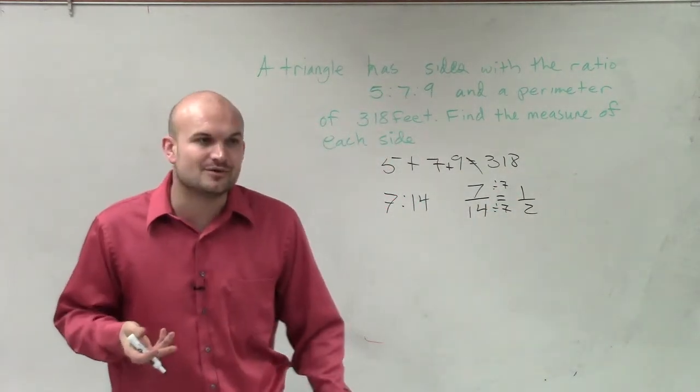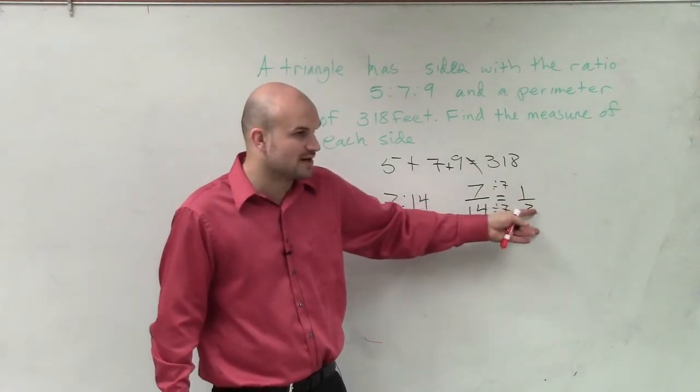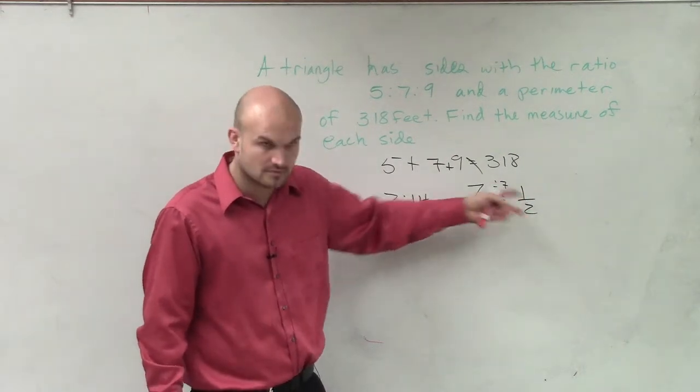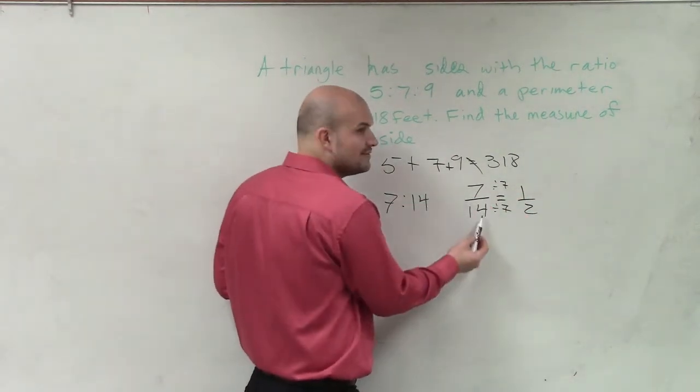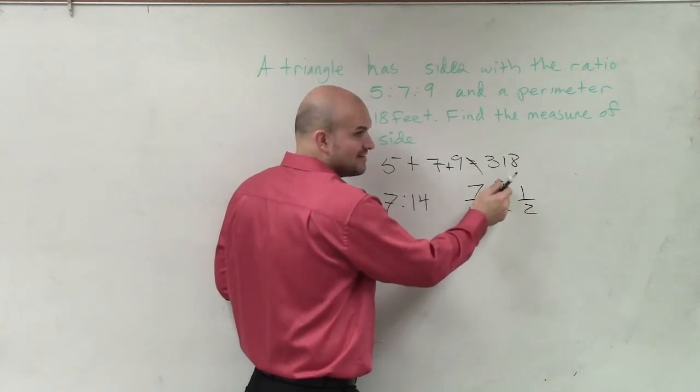So what I'm pretty much asking you is if this is already reduced, so if I divided by 7 to get to 1 half, I would have to multiply by 7 from 1 half to get to 7 over 14, right?